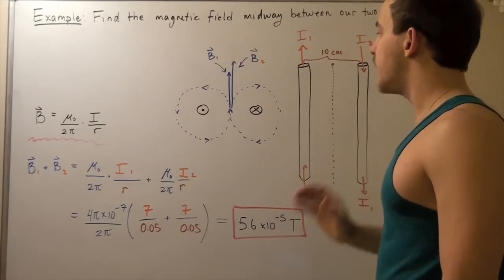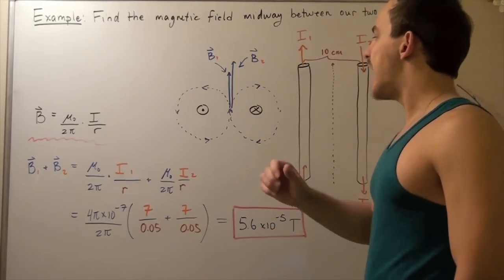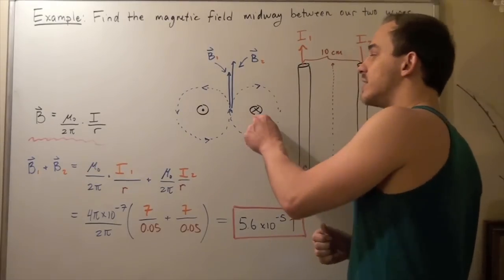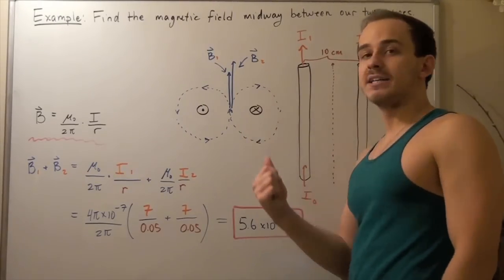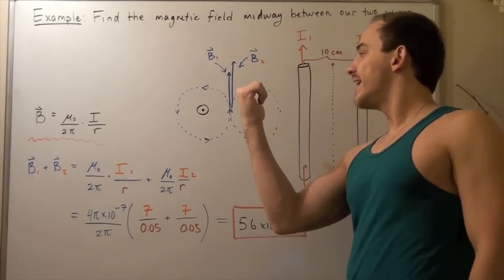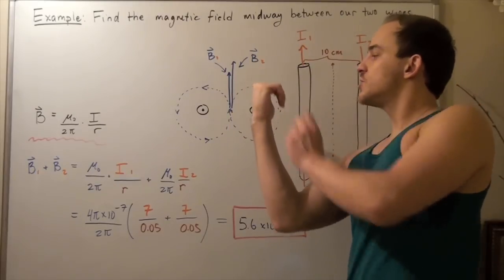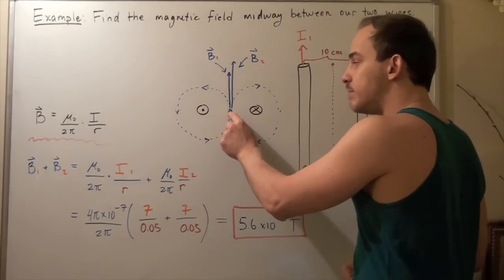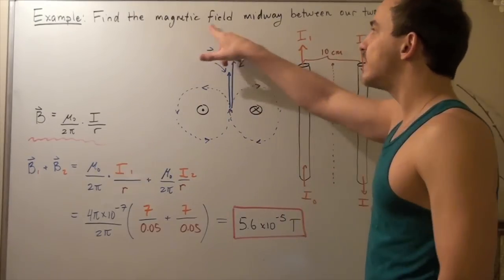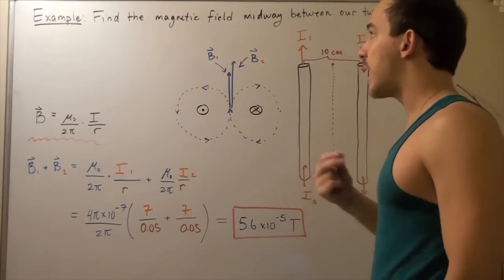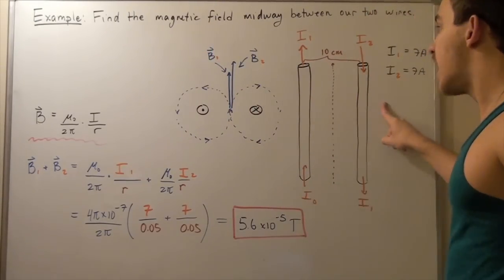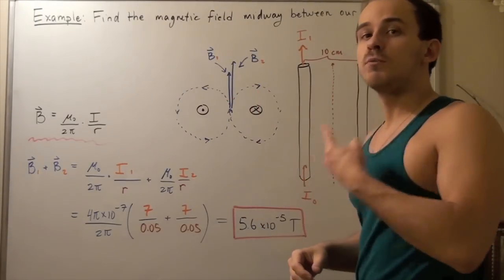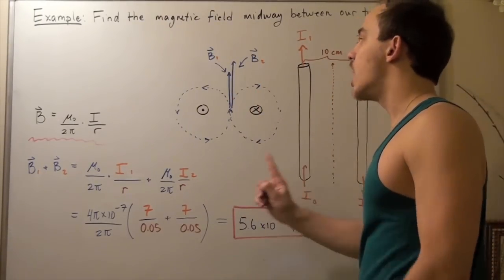So let's do the same thing for wire number two. Now we have to reverse our direction of our current because now our current is going inside. So we point inside and we see that our field is going this way. So I draw arrows going this way. And we see that at this point midway, our magnetic field vector, our direction of our vector from this guy is also pointing upward. So that means we have two vectors both pointing in the same direction upward.